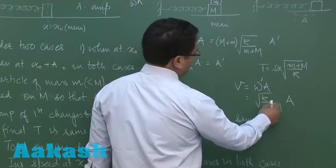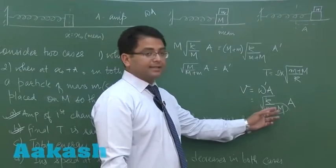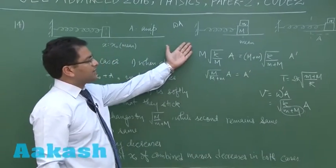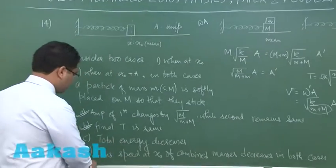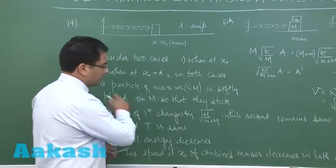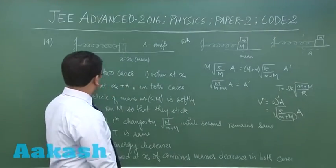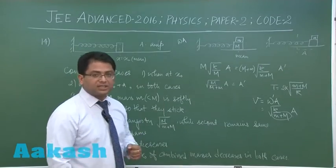Quite obviously earlier there was only one block but now the denominator has increased. So overall speed will decrease. So case a it is very clear the speed has decreased and even case b the speed is decreasing. So option number d is correct. So you could see from here for question number 14, a, b, d are the correct options. Now let us move to the next question.